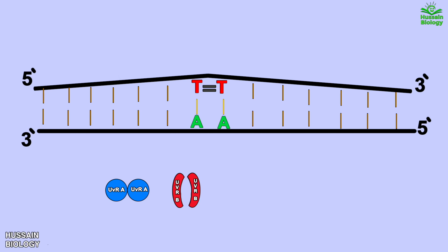Here in this animation we can see in presence of ATP molecule the UVR A dimer and UVR B dimer forms a complex. And then this complex binds with the DNA molecule.